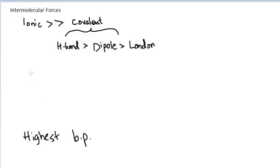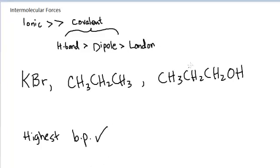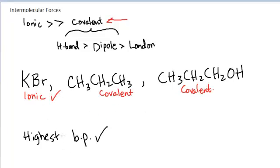Let's compare three compounds: potassium bromide, propane, and propanol. To compare their boiling points and put them in order, we first look at whether we have ionic or covalent compounds. Potassium bromide is ionic; propane and propanol are covalent. Between ionic and covalent compounds, ionic compounds tend to have higher boiling points because of ionic forces. So potassium bromide has the highest boiling point — it is number one because it is ionic.